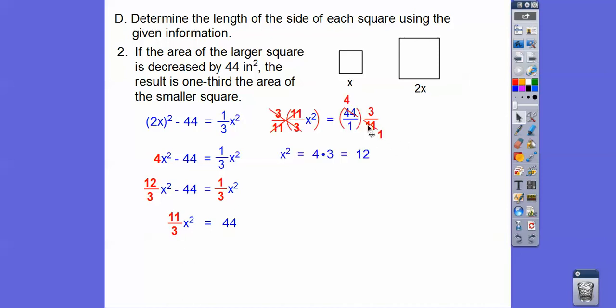Now we've got to get rid of this 11-thirds, so we'll multiply both sides by 3 elevenths. Nice and conveniently, 11 goes into 44 four times. 4 times 3 is 12. Those cancel, x squared equals 12. We can disregard the negatives, so x is the square root of 12, which is 2 root 3, which is about 3.46 inches. And then 2x is going to be twice 2 root 3, which is 4 root 3, which is about 6.93 inches.